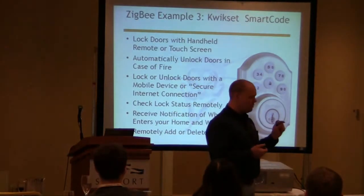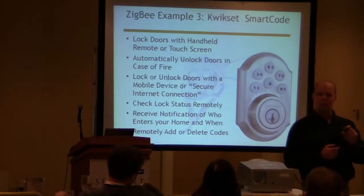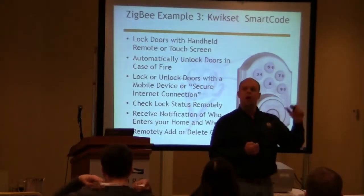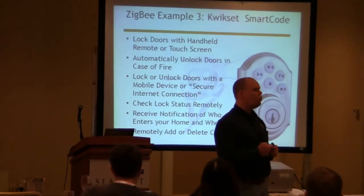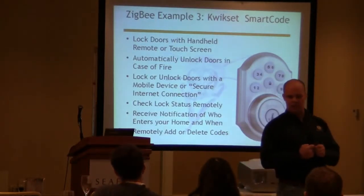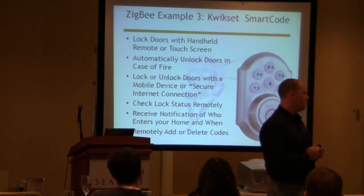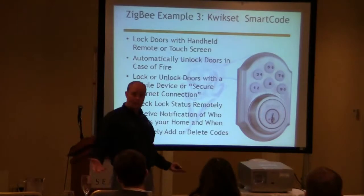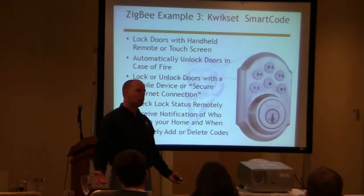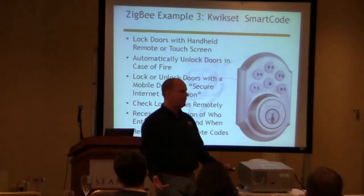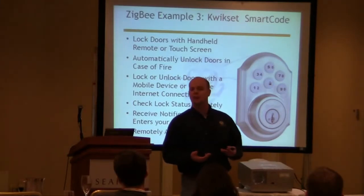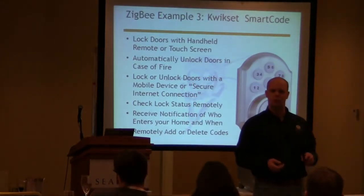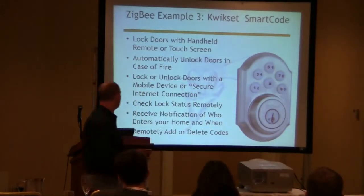We're already seeing some prototypes where Zigbee smoke alarms and CO detectors talk to the door locks to unlock your house in the event of a fire, so the fire department doesn't have to bust down the door. That's a good use of technology — I'm all for not fixing the door jamb when there's a fire. But can I manipulate that? Besides piping smoke into the house, are there ways we can manipulate these systems?